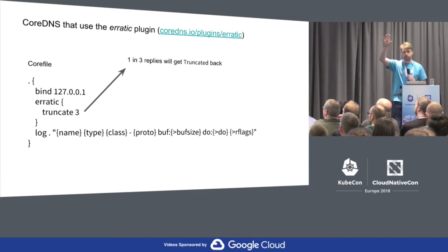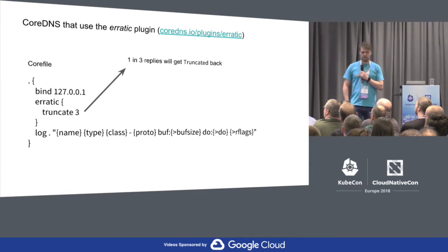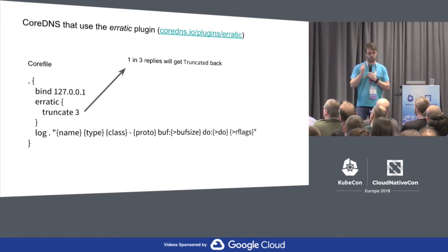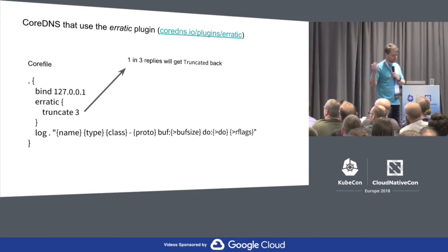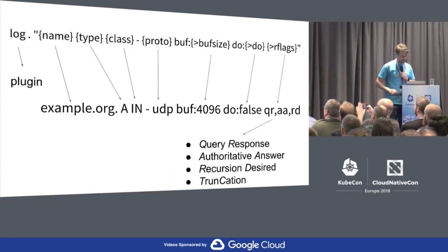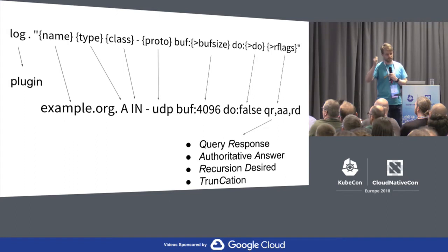So how did I test this? My upstream is CoreDNS. It binds to an interface and I load one or two plugins. The Erratic plugin — used for internal testing in the CoreDNS codebase — basically says one in three replies should be sent back truncated. Truncated in DNS means: I have an answer for you but your UDP buffer size is too small; I sent you what I have but truncated, so there is more. We also load the log plugin. When we log a thing we get the request domain name, the type A or AAAA, the class which is always IN, the protocol UDP or TCP, and the buffer size which is important for UDP — the maximum amount of data I can receive on this call.